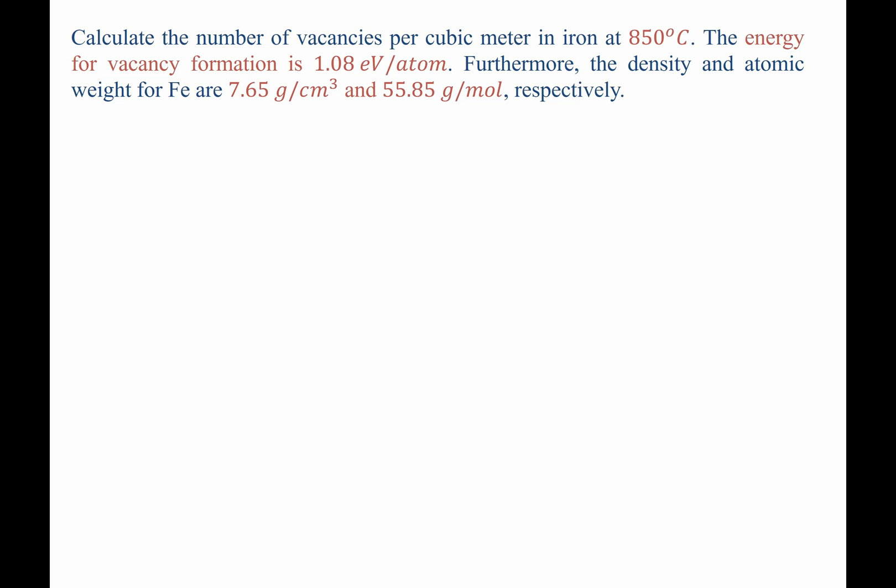Where we begin on a question like this is with the expression for the number of vacancies. N sub V, the value that we're trying to solve for, is equal to N, the site concentration of iron atoms, multiplied by the exponential of the negative activation energy, or energy of formation for vacancies, divided by KT, where K is the Boltzmann constant.